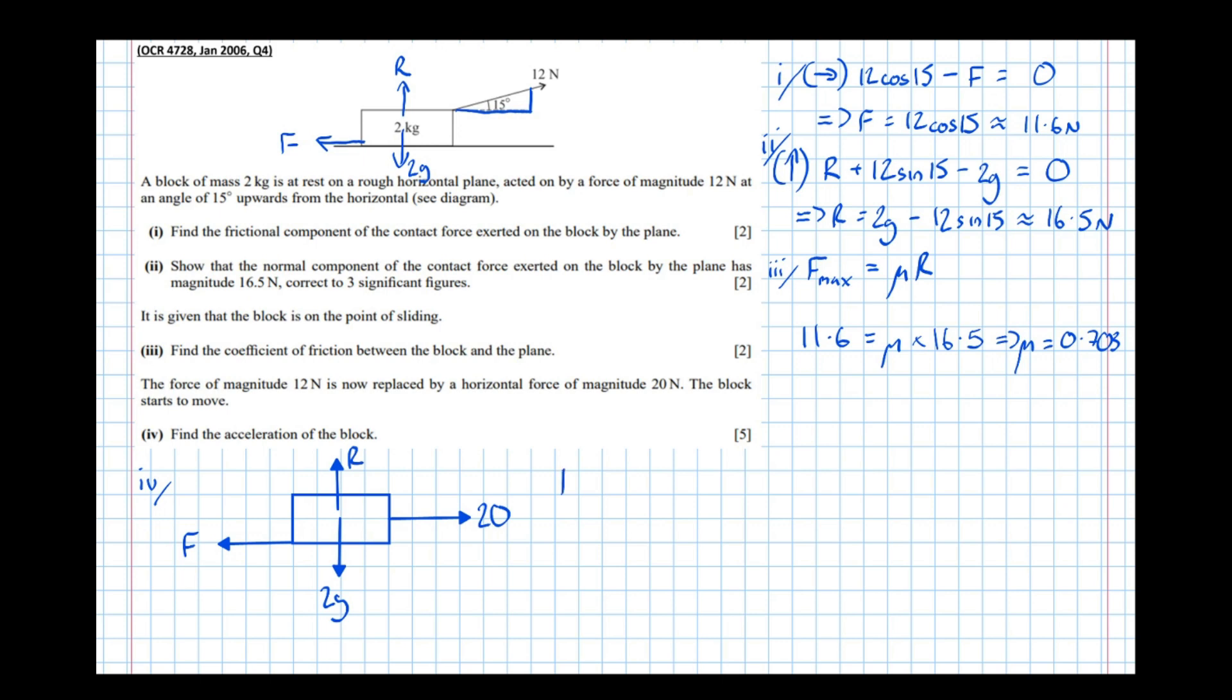However, let's just show that. Let's resolve vertically. So R vertically, up being our positive direction. Take any forces going directly down. Equals mass times acceleration, which is zero, since it's not accelerating up or down. Which means that R equals 2g. So now we've got that.